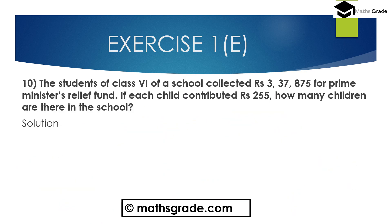Question number 10: The students of class 6 of a school collected 3,37,875 rupees for the Prime Minister Relief Fund. If each child contributed 255 rupees, how many children are there in the school? Here we have to use the division operation. The amount collected for the Prime Minister Relief Fund is 3,37,875 rupees. We have to divide 3,37,875 by 255.